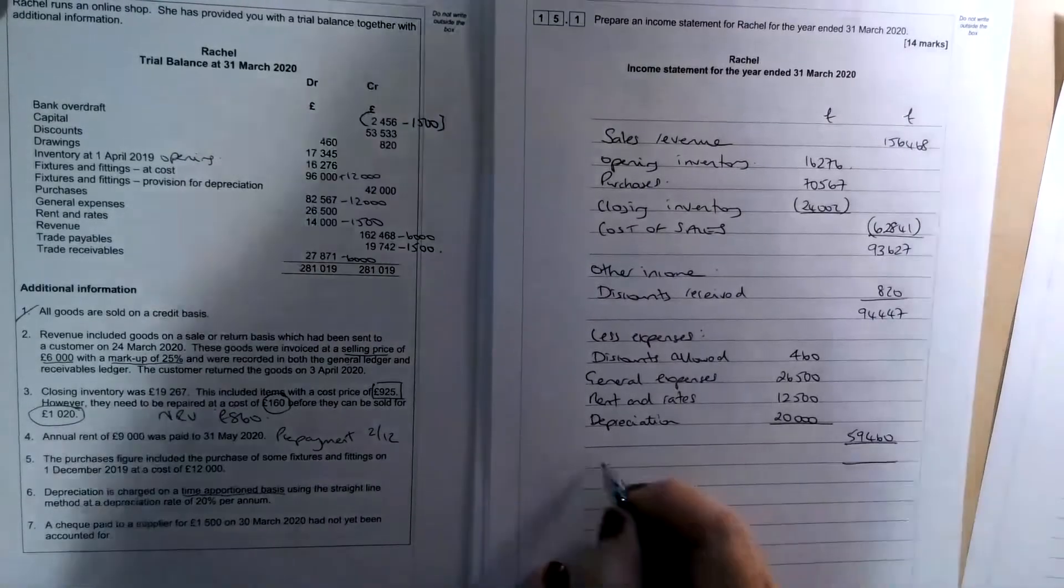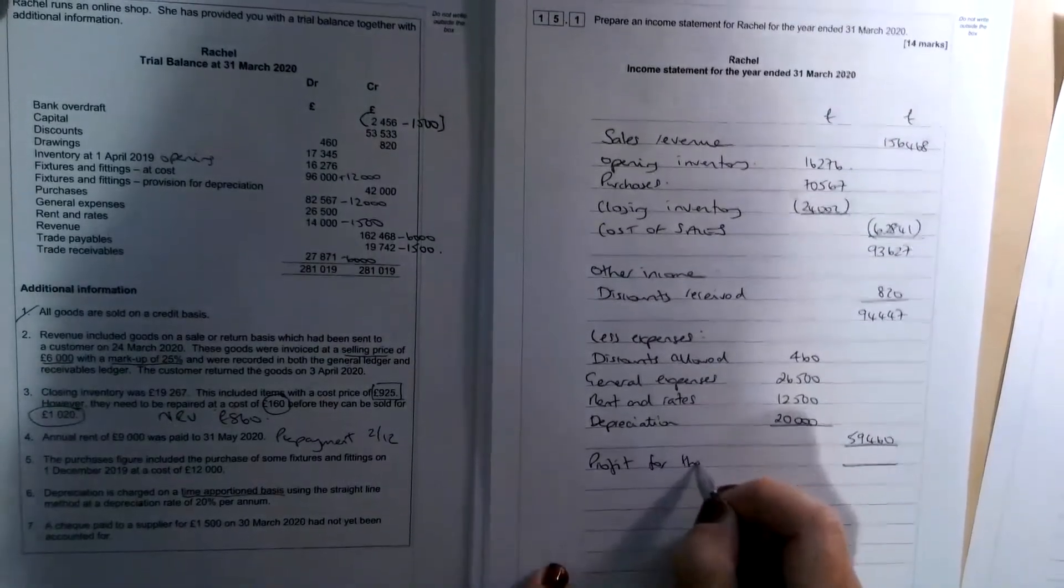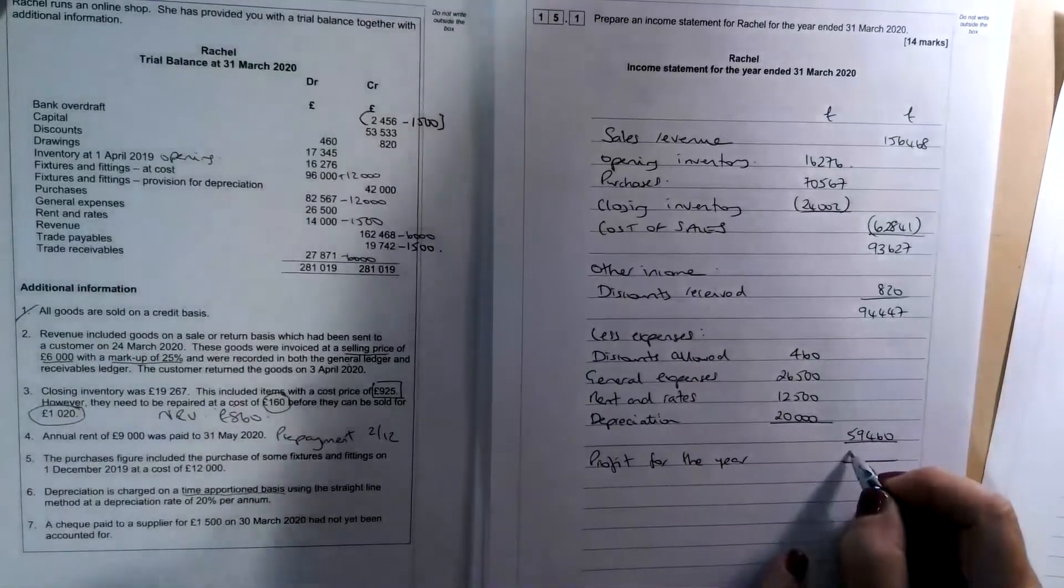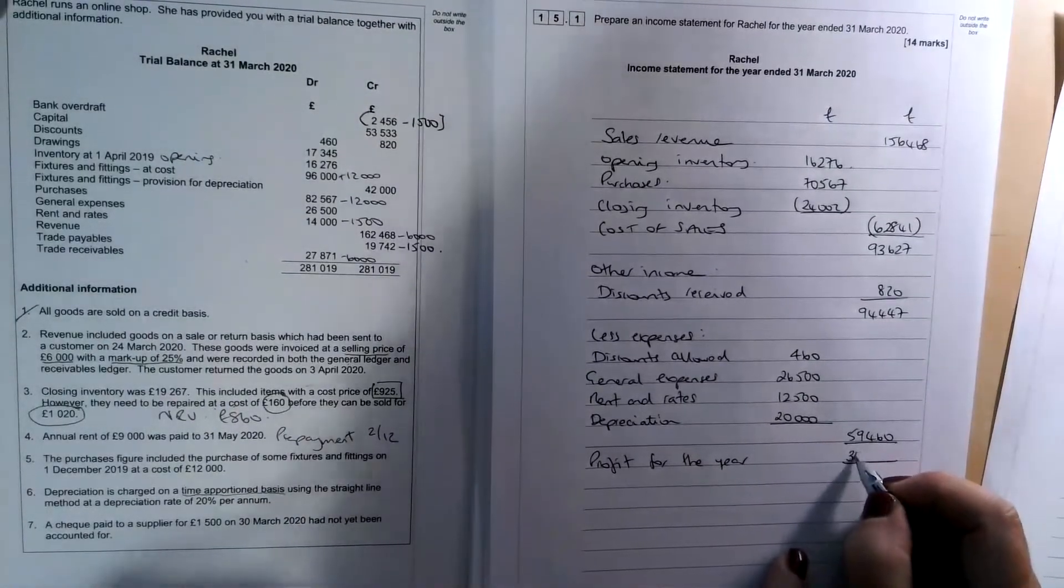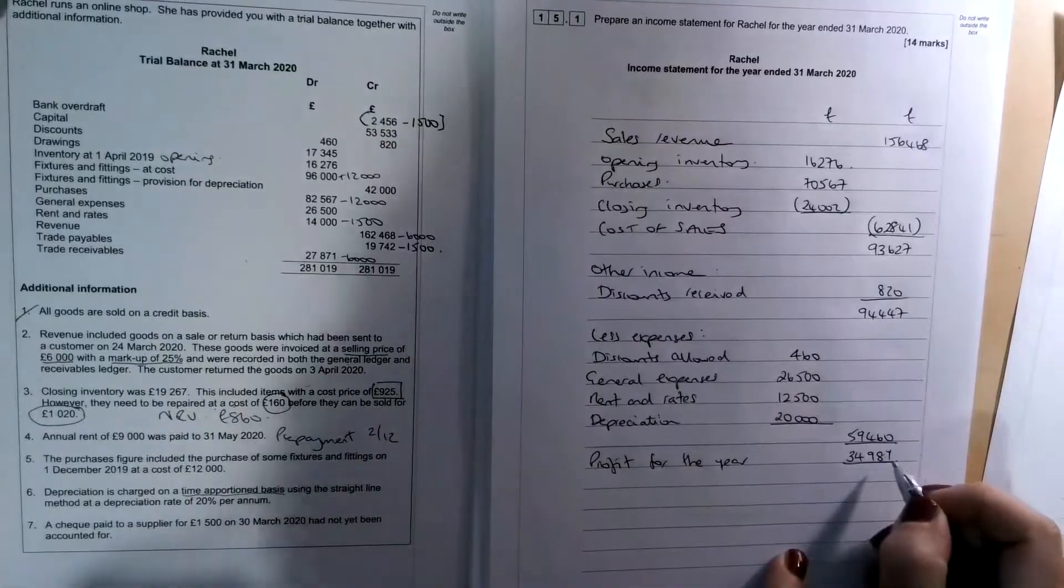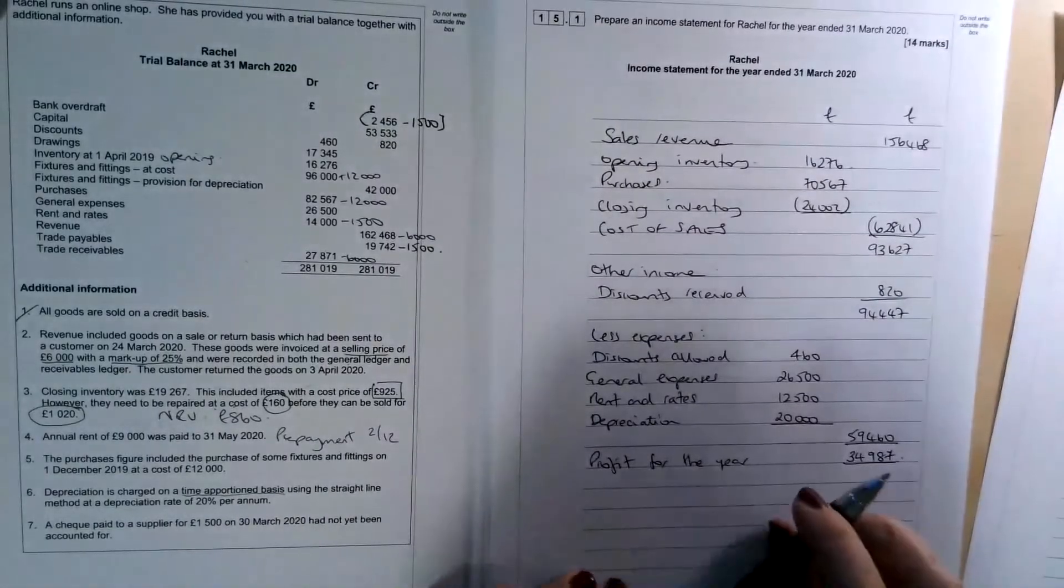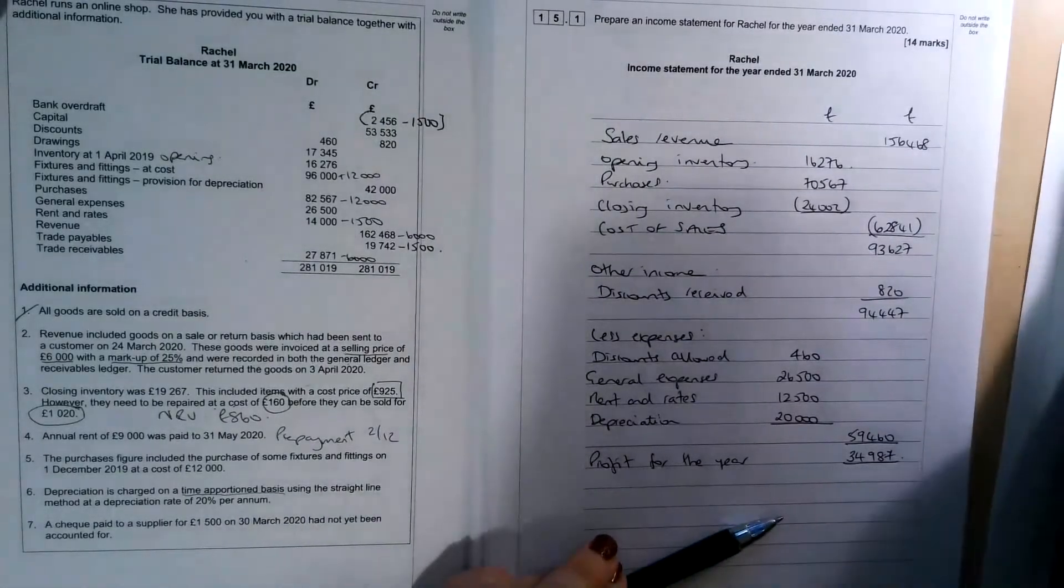And then if we take one away from the other, we get our profit for the year, which is £34,987. So there's part one of that question finished.